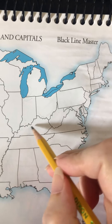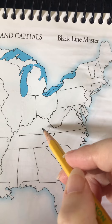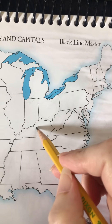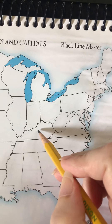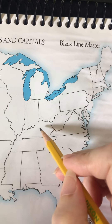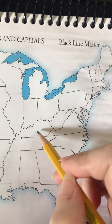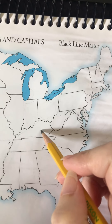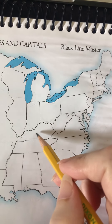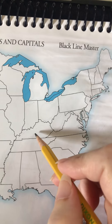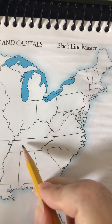For Kentucky, we say it looks like a fried chicken leg — like Kentucky Fried Chicken. And the capital is Frankfort, Kentucky, so Frank has a fort in Kentucky.